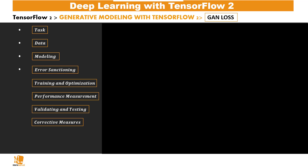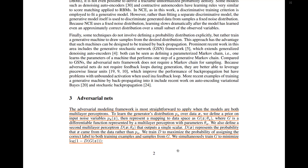Welcome to the section on the GAN loss. We shall understand how this loss was derived from the GAN paper. The adversarial modeling framework is most straightforward to apply when the models are both multi-layer perceptrons — that is, when we're using neural networks to learn the generator's distribution pg over data x, the real data.